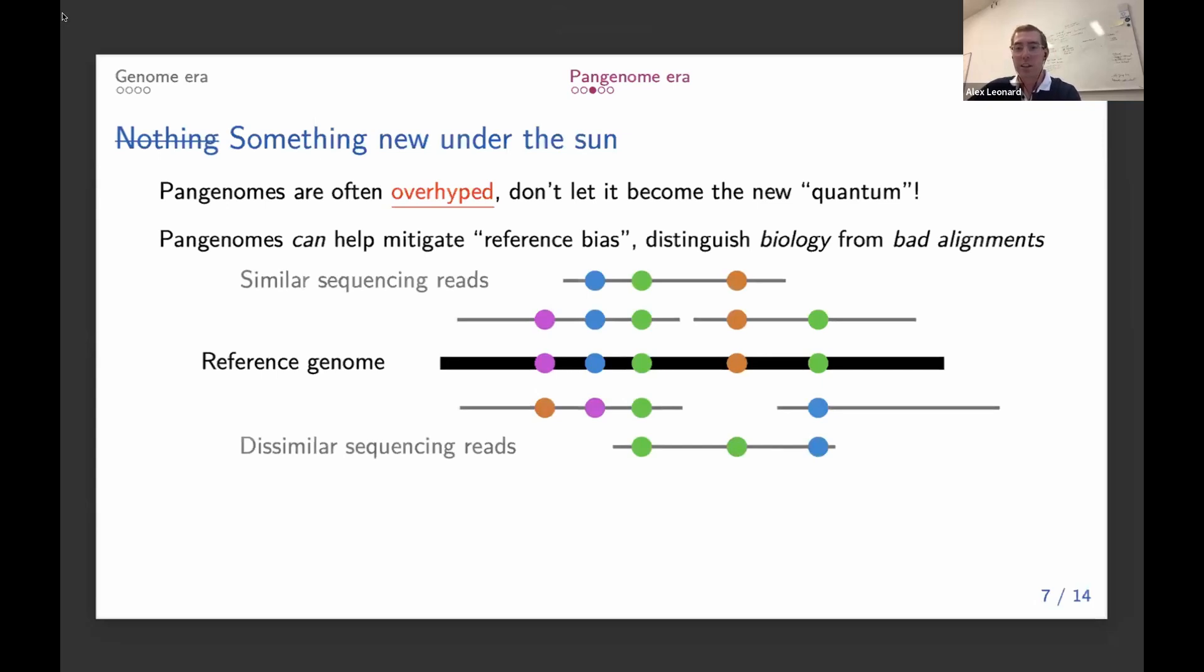But we have, on the other hand, dissimilar sequencing reads that have different mutations at those locations, it's really hard for a genome aligner to tell when sequencing reads are in the right place but just look very bad, or if they're in the wrong place.